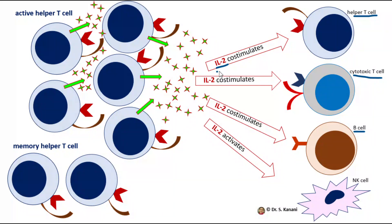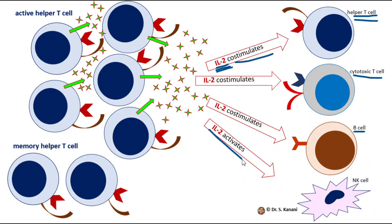Interleukin-2 makes our immune response a positive feedback system. For example, when a few active helper T-cells release interleukin-2 and it co-stimulates other helper T-cells, we end up with more active helper T-cells producing even more interleukin-2 — intensifying our immune responses. Interleukin-2 also stimulates proliferation and activation of natural killer cells, which are mass killers.